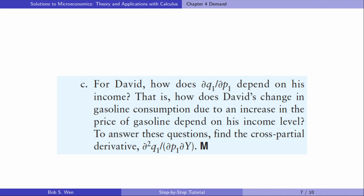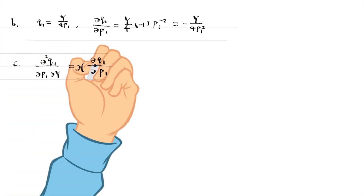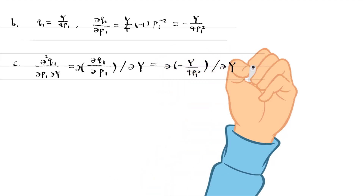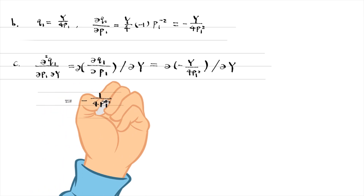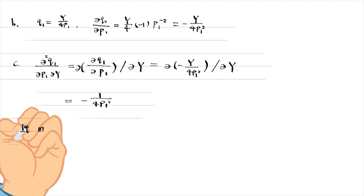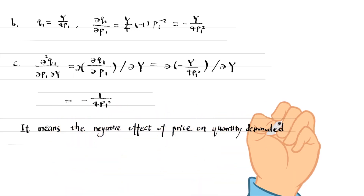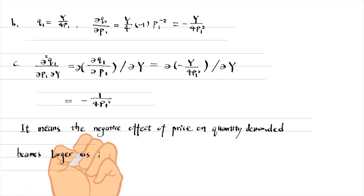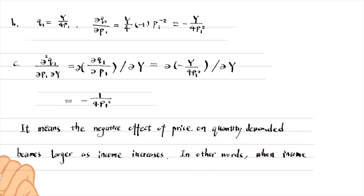In part C, for David, how does ∂Q1/∂P1 depend on his income? That is, how does David's change in gasoline consumption due to an increase in the price of gasoline depend on his income level? To answer this question, find the cross partial derivative. The cross partial derivative is negative. Both the first-order partial derivative and the cross partial derivative are negative, meaning that the negative effect of price on quantity demanded becomes larger as income increases. In other words, when income increases, the price effect on demand becomes more and more negative.